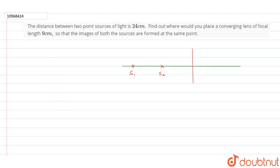So now we will solve this. We will use the lens formula: 1 by v minus 1 by u is equal to 1 by f. We will use this formula to solve this.